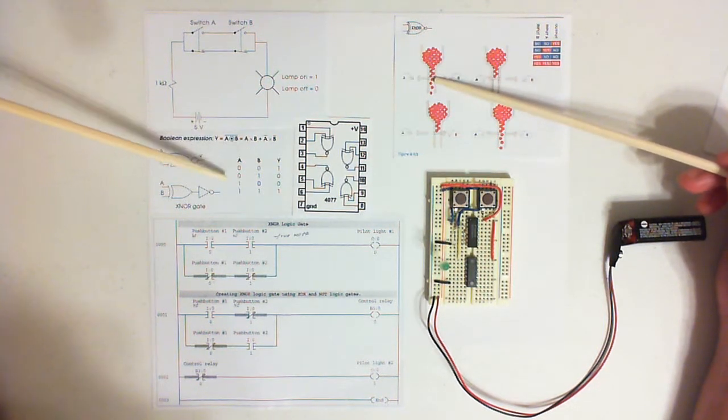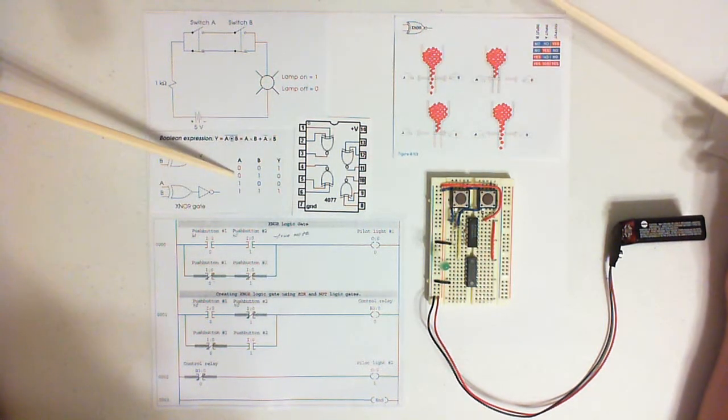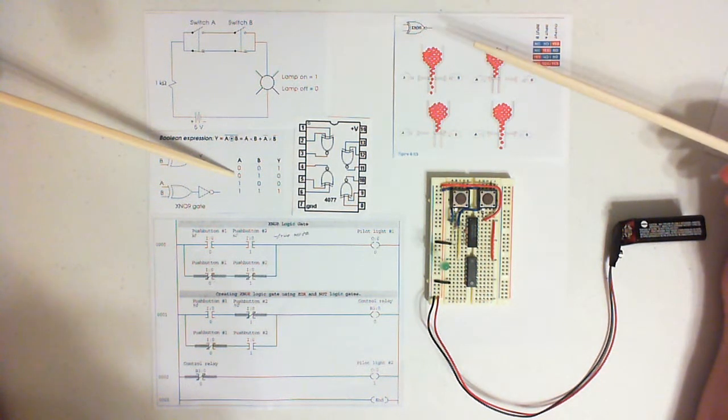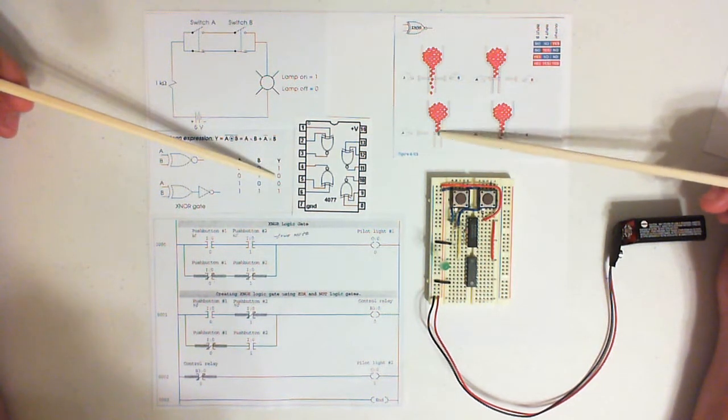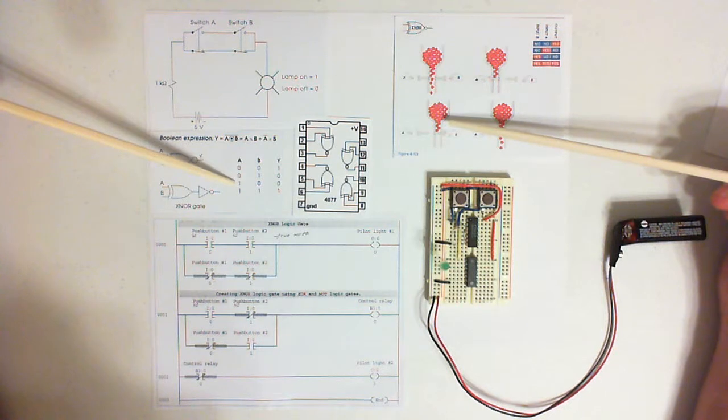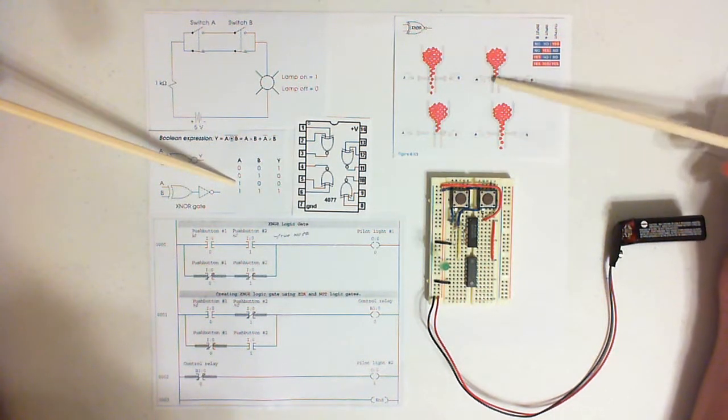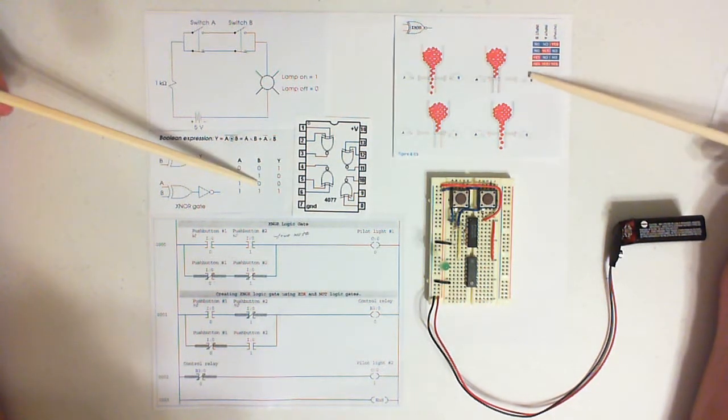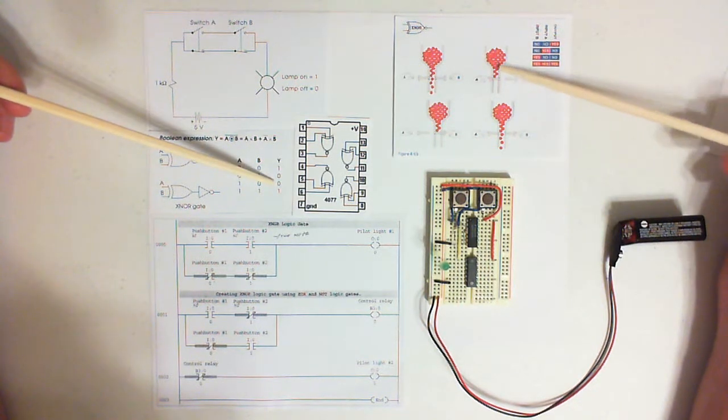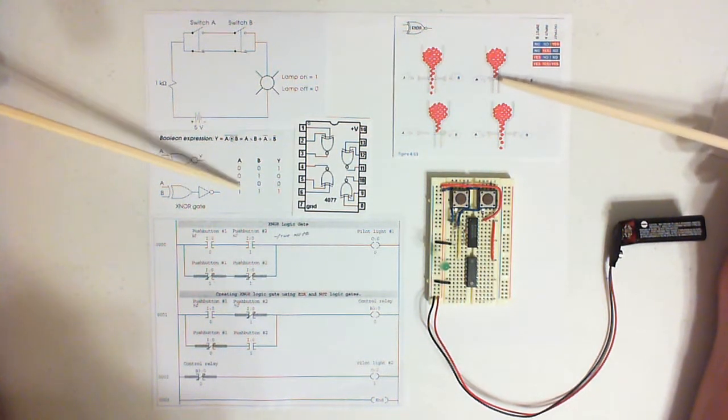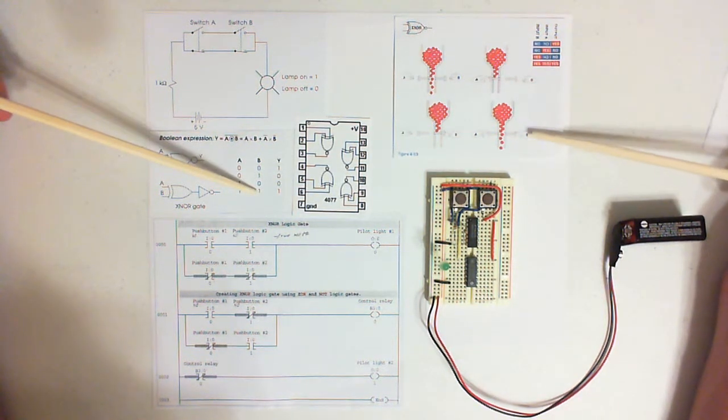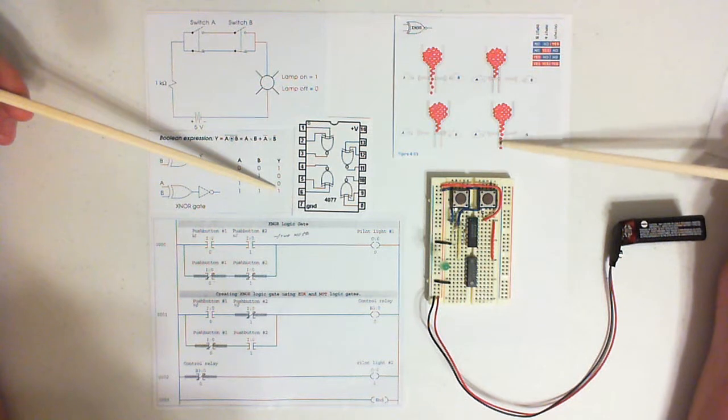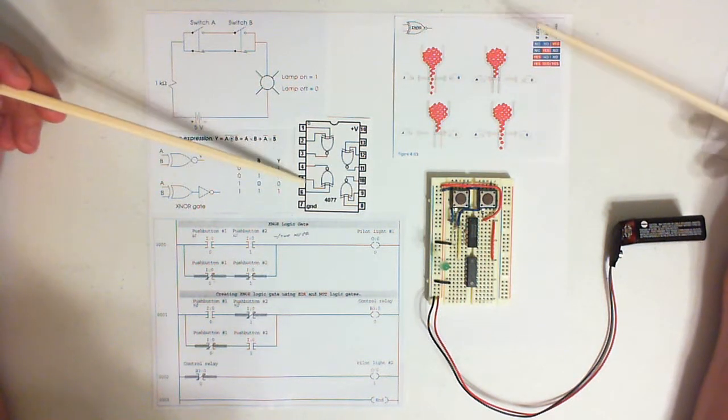Electron flow passes. When you don't press A and you do press B, electron flow does not pass. When you do press A and you don't press B, electron flow does not pass. When you do press A and you do press B, electron flow passes.